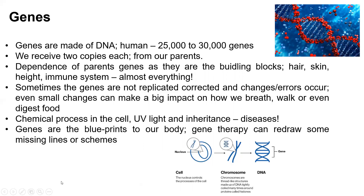In humans, roughly 25,000 to 30,000 genes have already been discovered and reported. Our genes are made of DNA, so we can simply say genes are DNA. We receive two copies of each gene in our chromosomes — half from each parent — so when the zygote is formed we get two copies. We depend greatly on these parental genes because they are the building blocks of what we are.